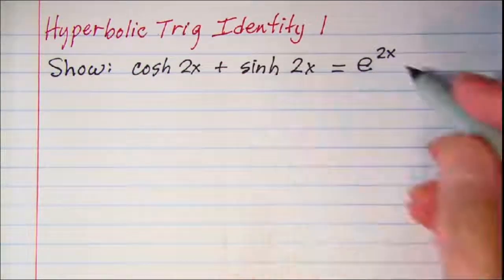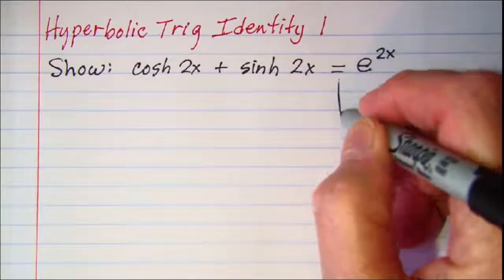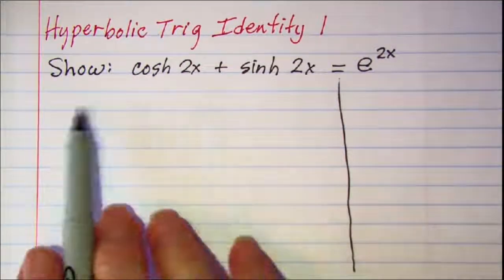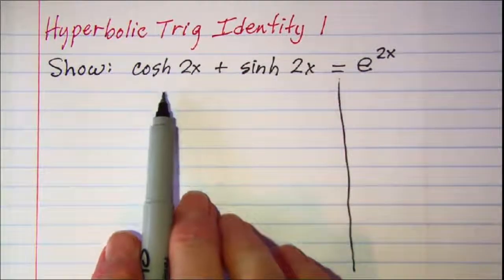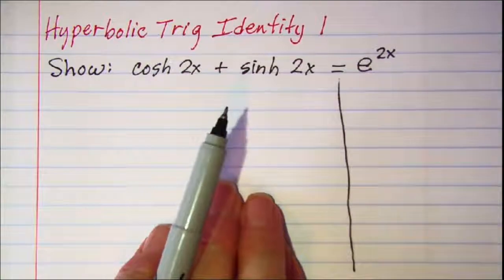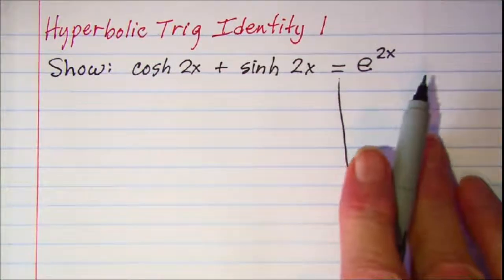Usually when I'm working an identity I'll work one side and I'll draw a line here so that I can stay on the one side. I'm going to establish that this left side is equal to e to the 2x.